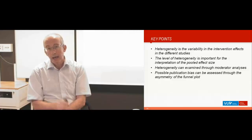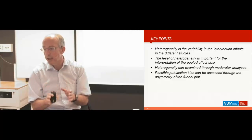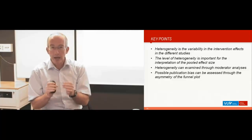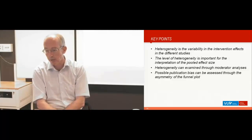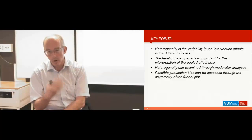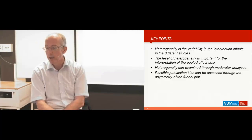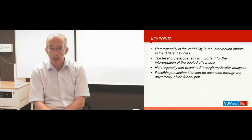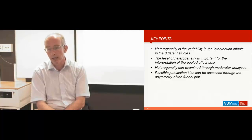Key points: heterogeneity is a key concept in any meta-analysis — it's the variability in the intervention effects across different studies, and the level of heterogeneity is key to interpreting the pooled effect size. You can examine it by moderator analysis, subgroup analysis, meta-regression analysis, and looking at outliers. Another key issue is publication bias: if you do a meta-analysis, you should always examine the risk of publication bias as well.